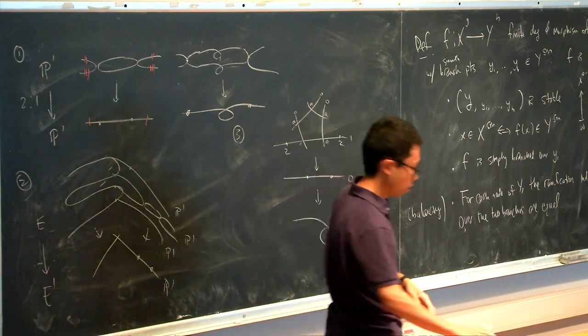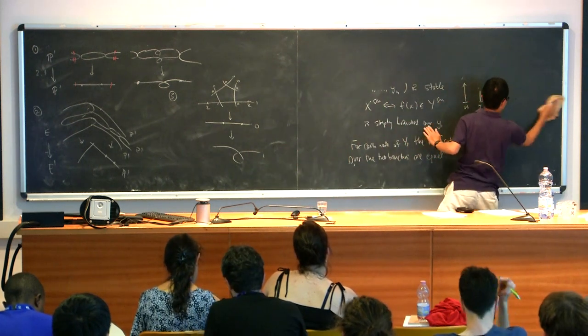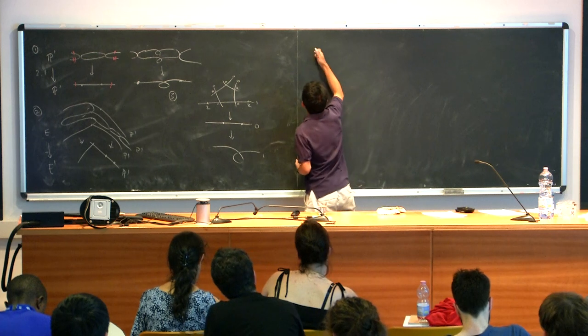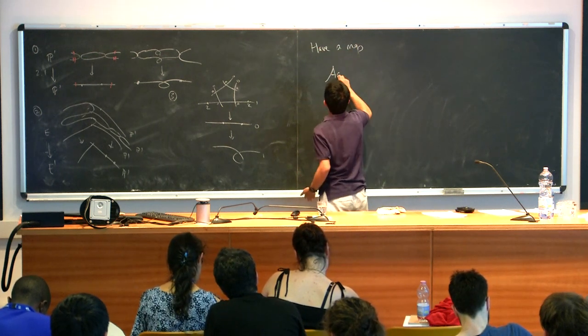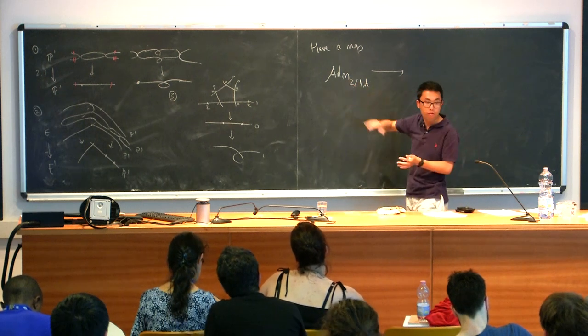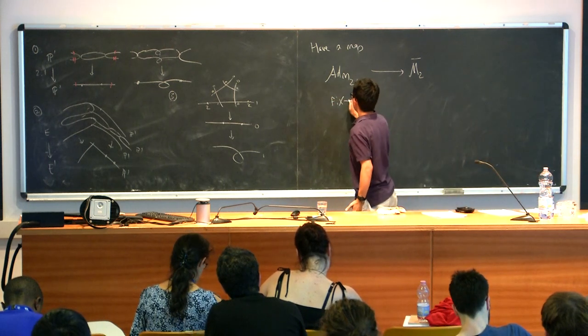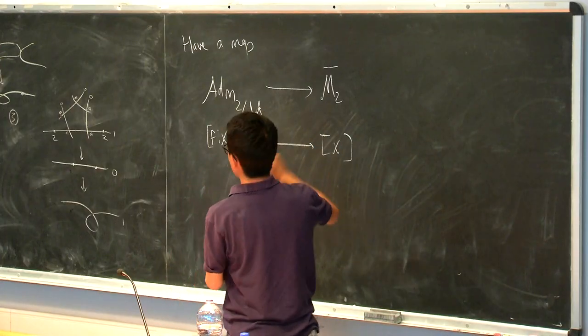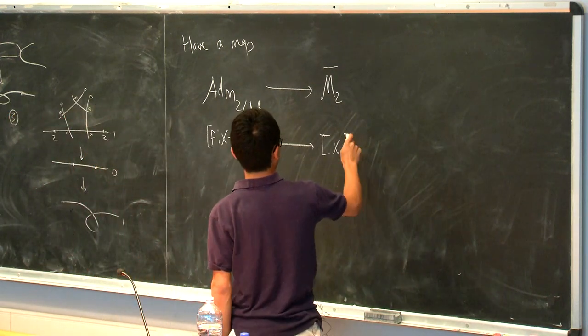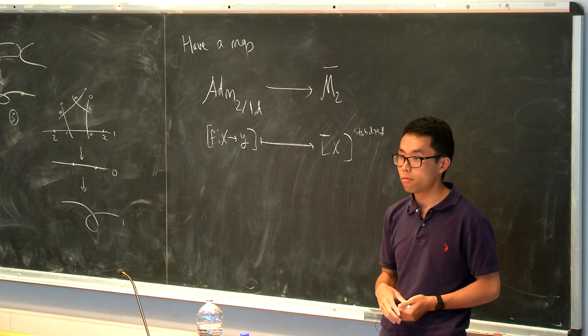Great. Any questions? Okay. So the upshot of all this, so I have a forgetful map. So I have a map where I can just start with an admissible cover. So let me specialize to the case of genus two and genus one. And I have a forgetful map that only remembers the source, right? So I can just remember the source. And what I want to say is, it takes some cover and just remembers X, but this is not quite good enough because as we already noted, often you get non-stable curves. So you can't just take X, but you have to take X and sort of stabilize it.